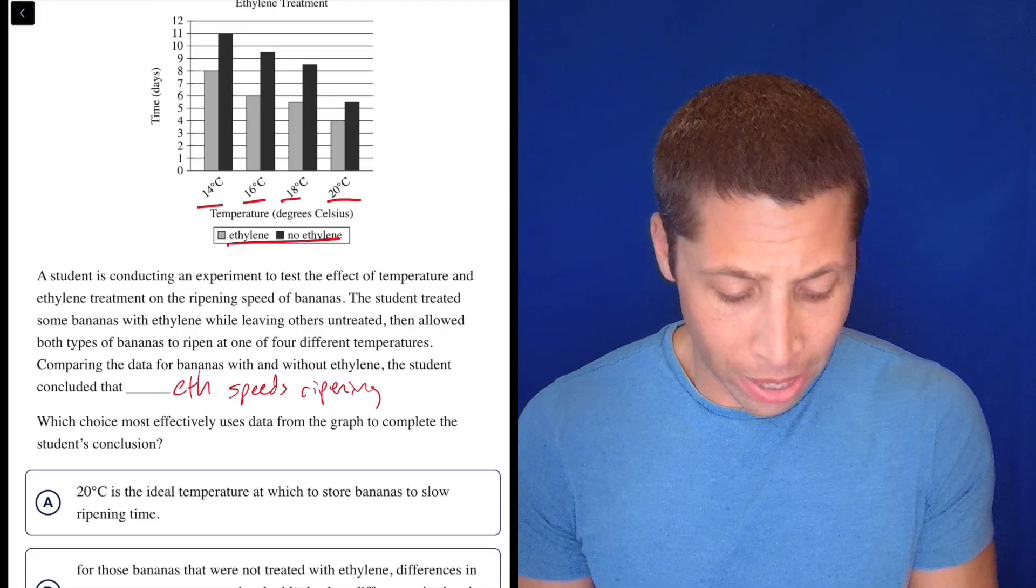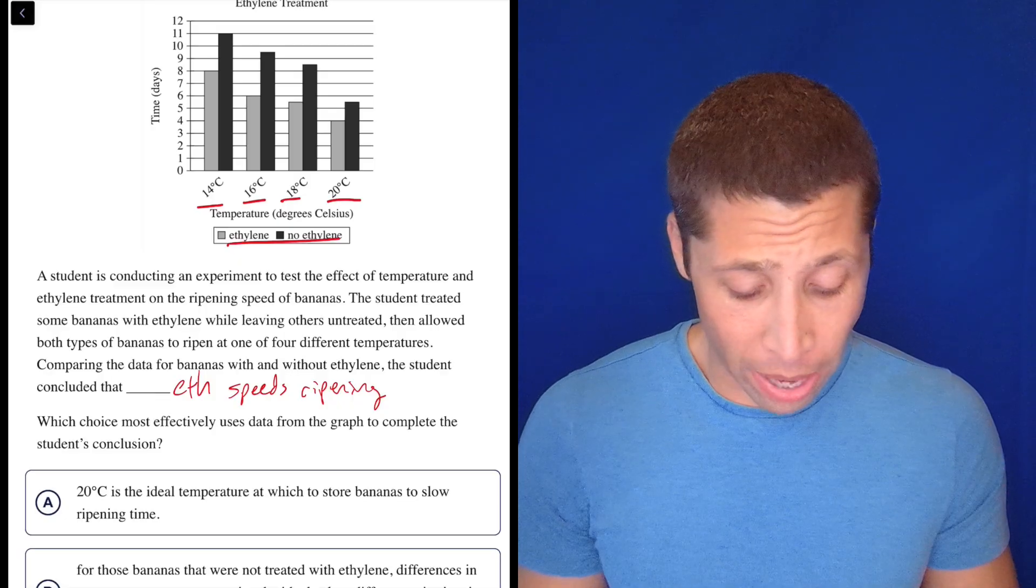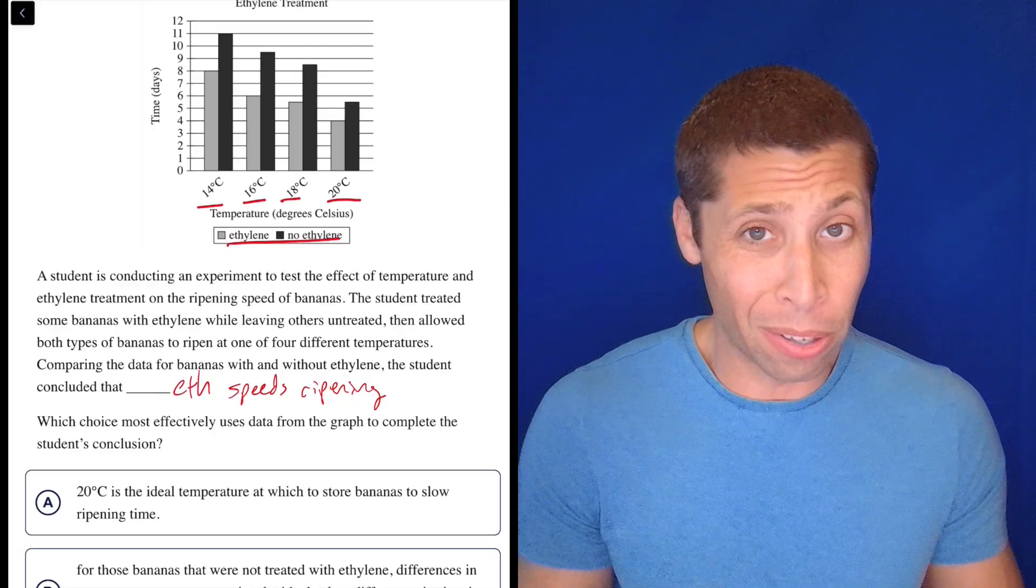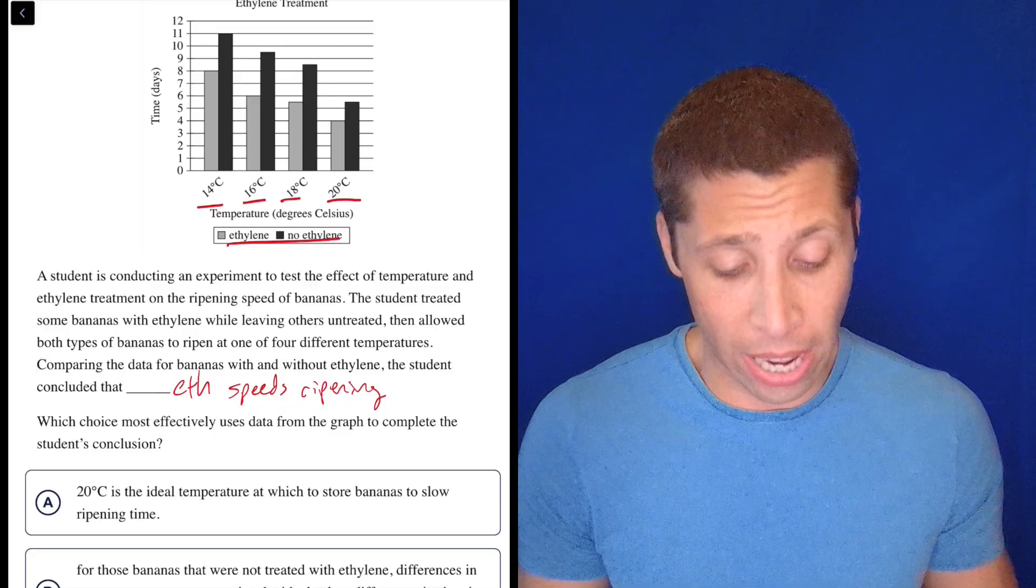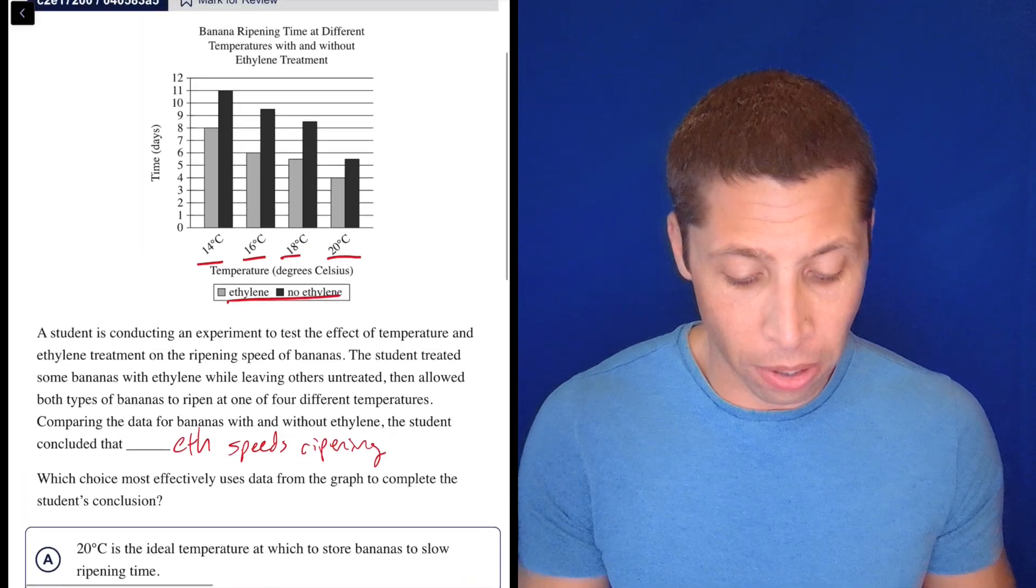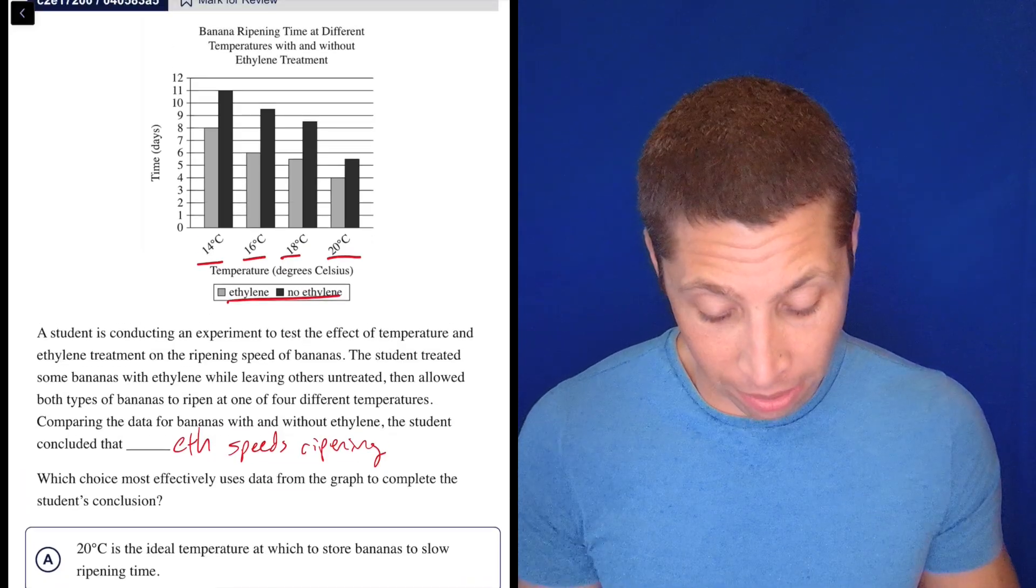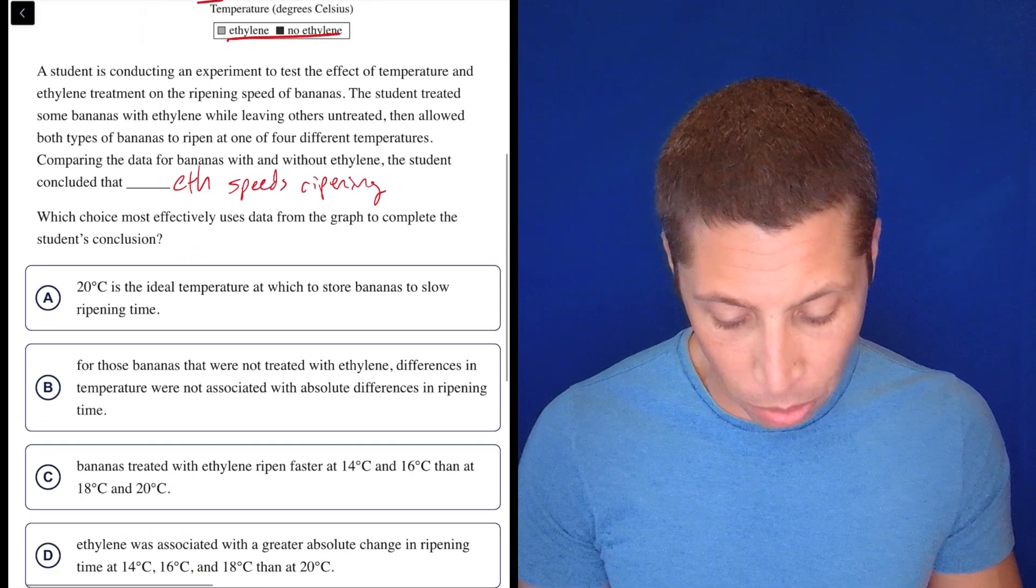ethylene speeds ripening, right? That's kind of what I'm seeing. Or maybe it has to do with the temperature as well, but I don't know. This chart seems very easy to kind of understand. The gray bars are shorter than the black bars, so that the time that it took to ripen is less. So I don't know, let's just see what the choices say.